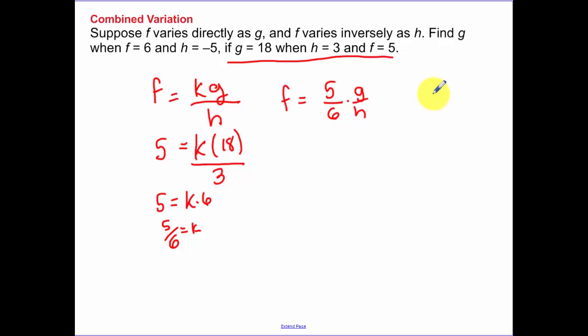Now it's a matter of finding g, so this is what I'm looking for when f is 6 and h is negative 5. So f is 6, h is negative 5, and I'm looking for g. On this right side, this is going to cancel to be a negative 1. So I basically have negative 1 sixth g because the 5 and the negative 5 cancel. So then I multiply both sides by a negative 6, and I get negative 36.